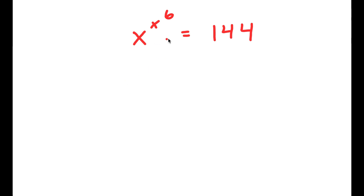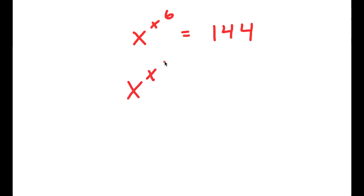In this problem, I have x to the power of x to the power of 6 is equal to 144. To solve this, I'm going to start by taking the power of 6 on both sides.